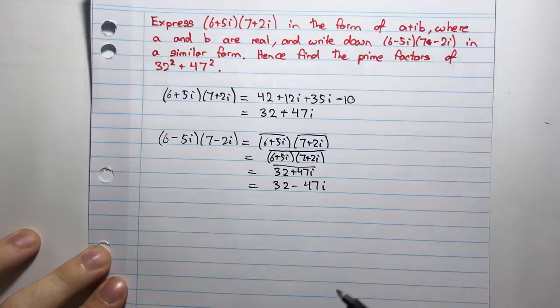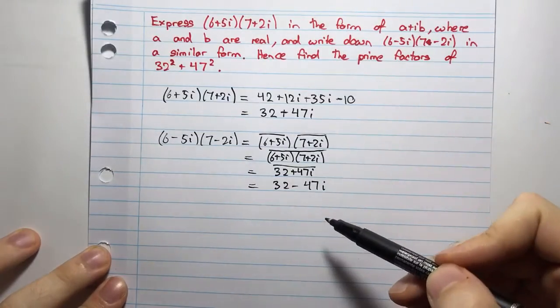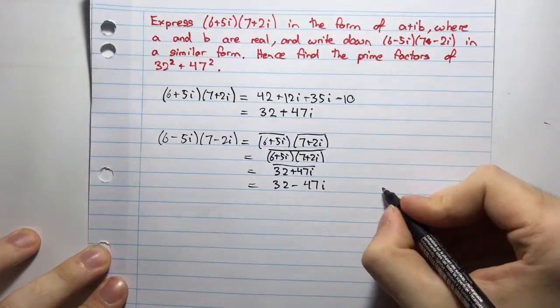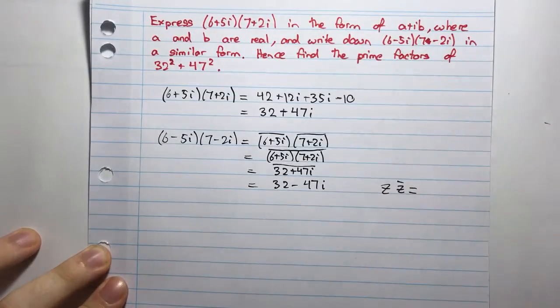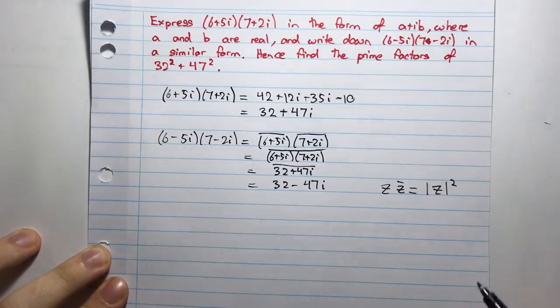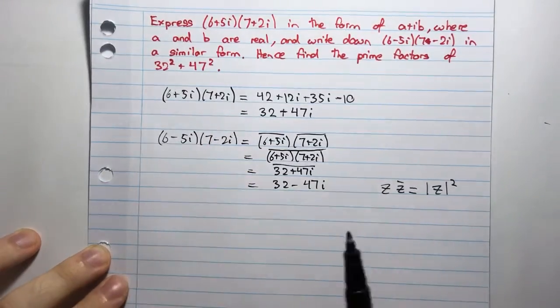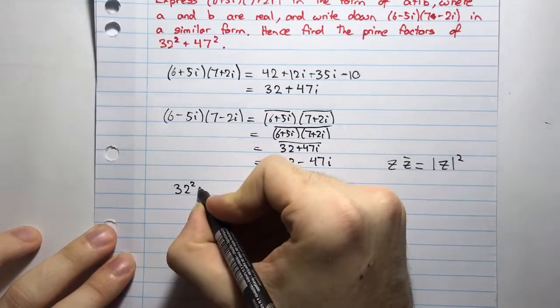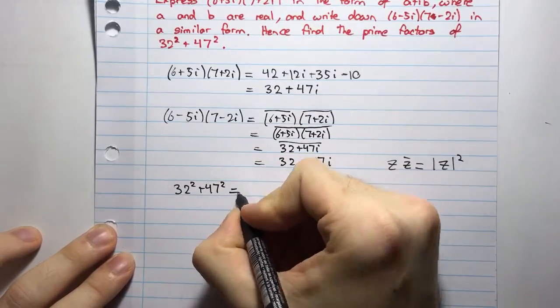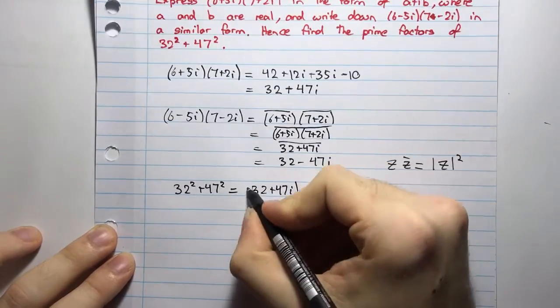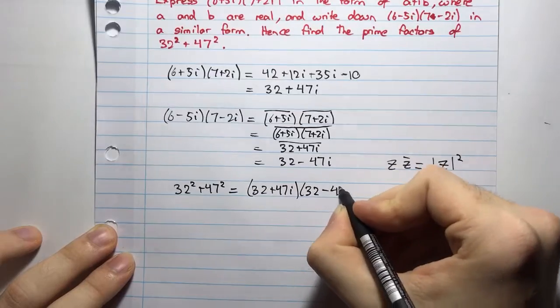So, I can say that this is the real part of this, and the 47 is the imaginary part of this, and almost the imaginary part, it's negative, the imaginary part of this. So, this kind of makes me think I need to multiply these two, because I know that these are conjugates, and I know that the conjugate times a complex number times its conjugate is equal to the modulus squared.